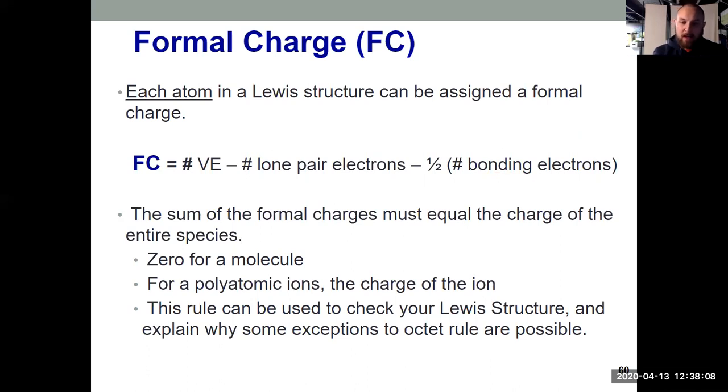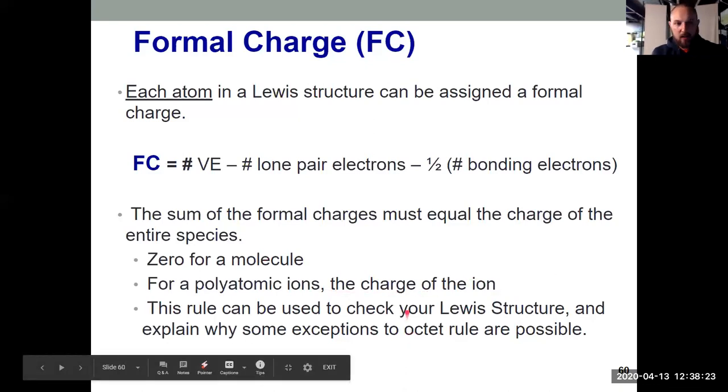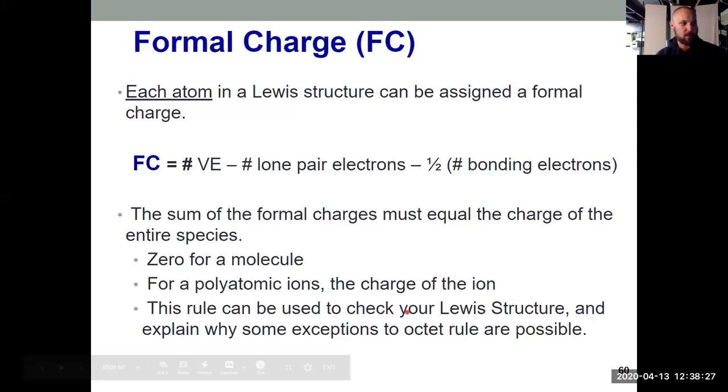But if we have a polyatomic ion, something that's charged overall, be it positive or negatively charged, the sum of the formal charges has to equal the charge on your polyatomic ion. So that helps us check our Lewis structure, and it will help explain some of those exceptions to the octet rule, things that are electron deficient and hypervalent.